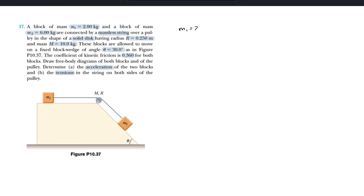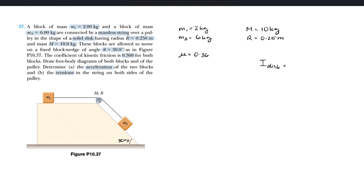Let's write out all our givens. Mass 1 is 2 kilograms, mass 2 is 6 kilograms. The big mass of the spinning wheel is 10 kilograms, and its radius is 0.25 meters. The angle between them is 30 degrees, and the coefficient of friction is 0.36. Since this is a cylinder spinning on the axis going through it, the moment of inertia will be one-half m r squared. Make sure to keep the correct variable names.